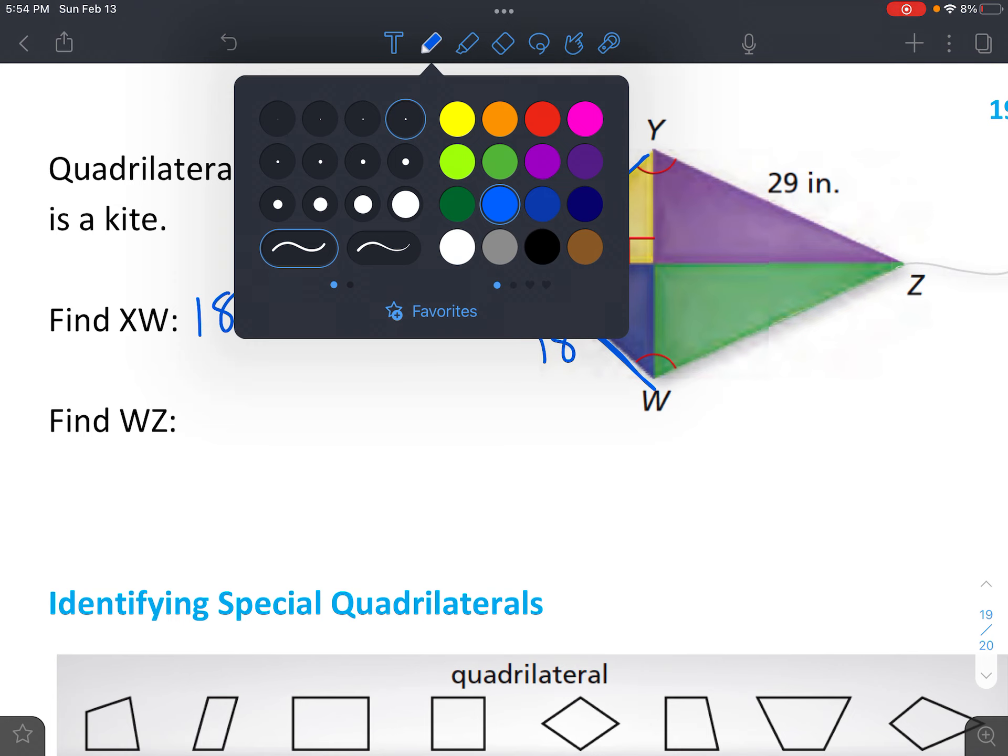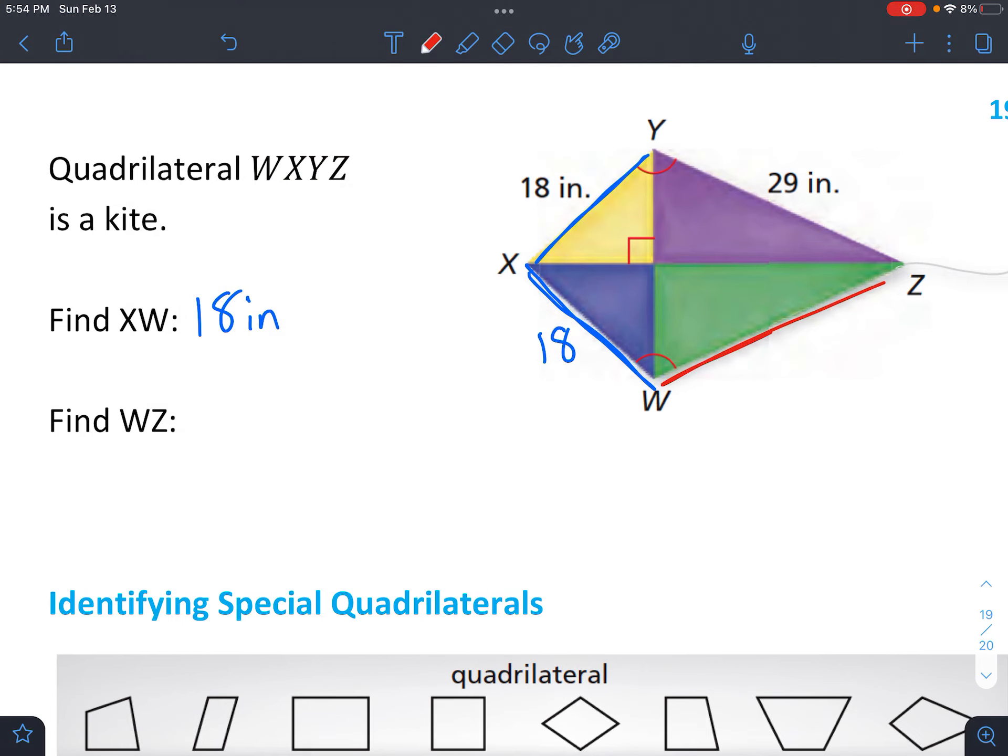And WZ, so let's match up the other ones that are the same. WZ is the same as XZ. And see if the sides that are equal to each other, or I'm sorry, the sides that are not equal to each other are joined with the angles that equal each other. So this one has to be 29.